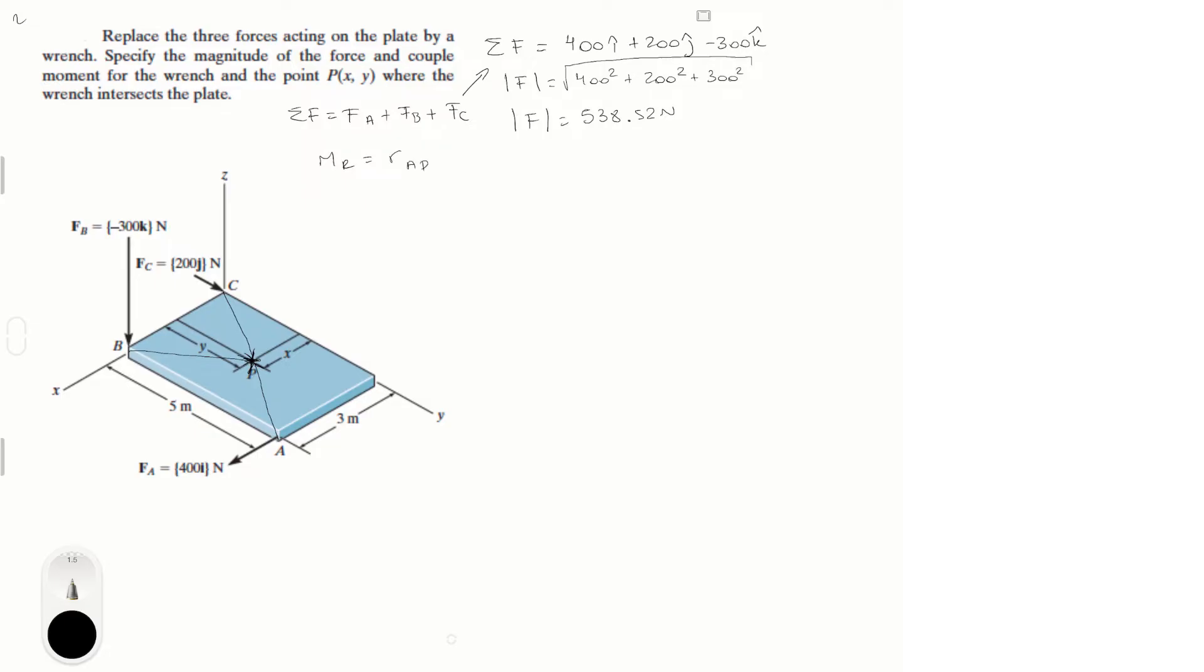So R from A to P cross F of A plus R from B to P cross F of B plus R from C to P cross F of C. This is basically doing this vector times cross these forces, and that gives you the moment of the wrench. Now I have to solve each of these cross products. Don't forget this formula, write it down with highlighter because we're going to come back to it after a very long mess of matrices.